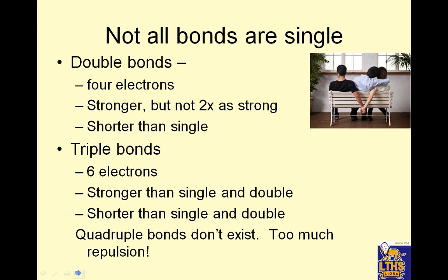Not all bonds are single. There are double bonds. Double bonds have four electrons. They're stronger, but not twice as strong. And they're shorter. Shorter things are stronger. If you have a stick, and these are your hands and your arms, and you decide you're going to try and break it because you're strong, if it's a wide stick, it's easy to do. But if it's shorter, if the stick was shorter, it's harder to do. Triple bonds have six electrons. Four electrons is often called two pairs. It's often called three pairs. That's why it's triple, because single is one pair. Stronger than single and double. Shorter than single and double. Quadruple bonds don't exist. There's too much repulsion because too many electrons close together.